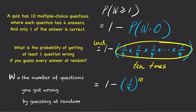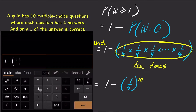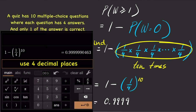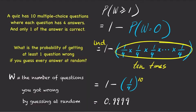Now, plug this into your calculator: 1 minus 1/4 to the 10th power. And the answer is 99.99%. In other words, there's a 99.99% chance of getting at least one question wrong by guessing every answer at random.